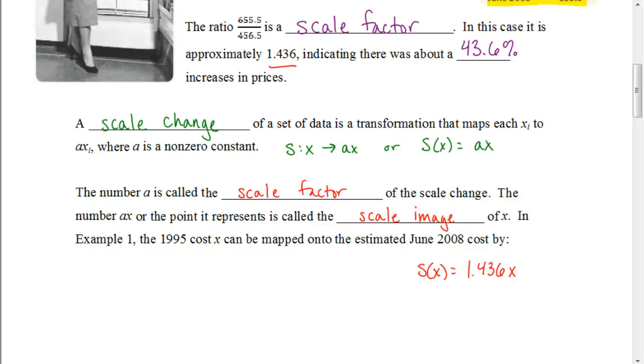In 1995, if I knew how much a loaf of bread would cost, I could put that in here for x. And that would give me an estimate of what I would expect to pay in June of 2008. Or, if I knew how much a gallon of gas was in 1995, I would take 1.36 times that value to estimate what the price would be in the year 2008.